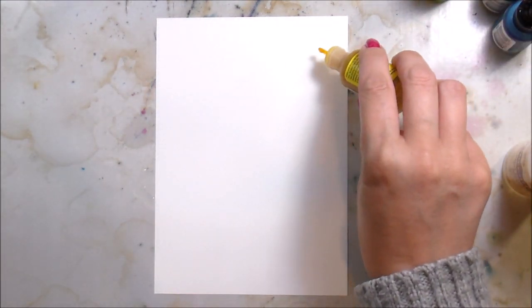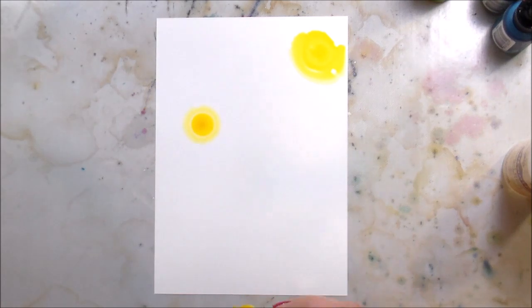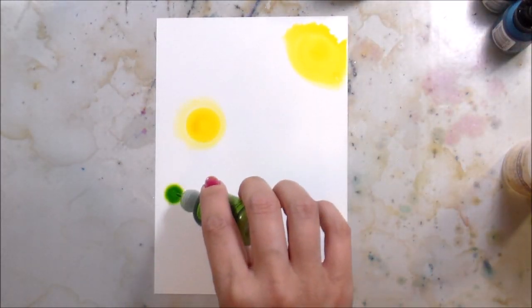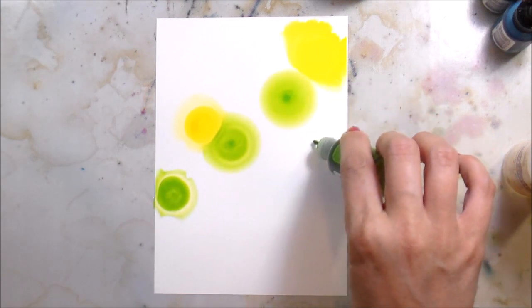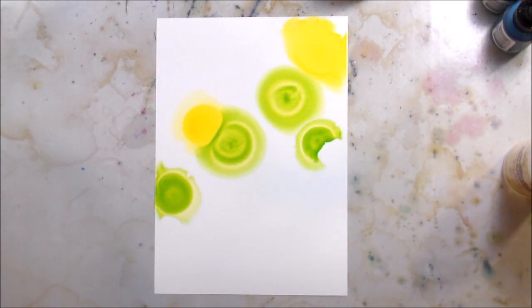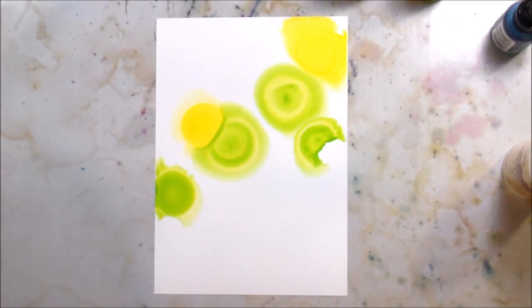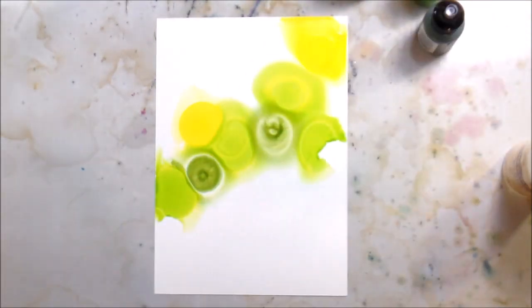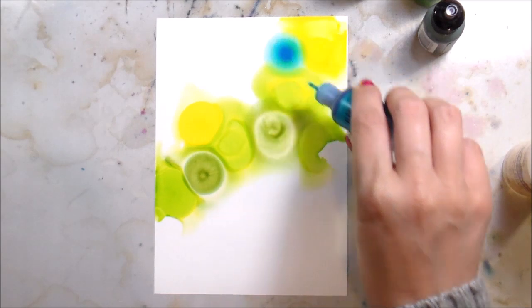As I showed you, I'm working on Yupo paper. This is a special shiny paper. I've also seen people use photo paper. I am starting off with the alcohol blender solution, just laying some of that down, and then just dropping the colors in.